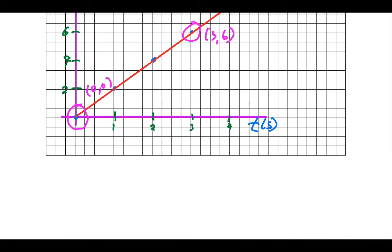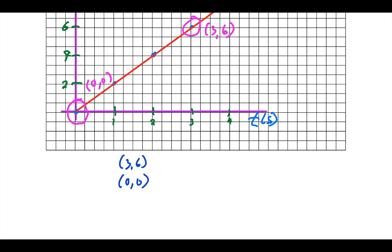The zero, zero is my initial point because that's at the beginning of the graph. The three, six is my final point because that's the end or farther away as I move along the line. So three, six is my final, zero, zero is my initial. That's really important to recognize.